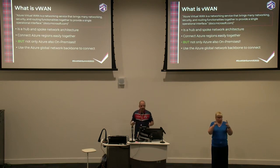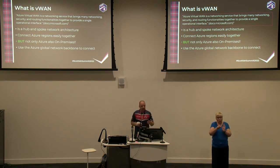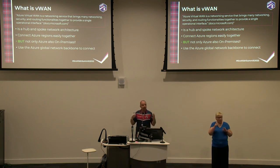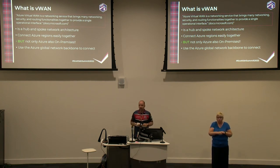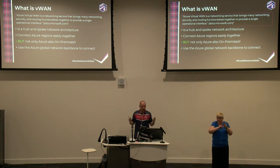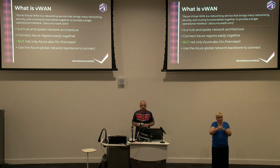The official statement is: Virtual WAN is a network service that brings many networking, security, and routing functionalities together to provide a single operational interface. On top of that, it's a hub-and-spoke network architecture. You can connect different Azure regions together, connect all regions, your branch offices, and your headquarters, and use the global Azure network backbone to connect each branch office and Azure region together.